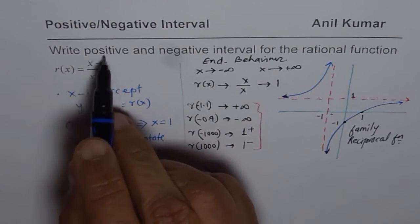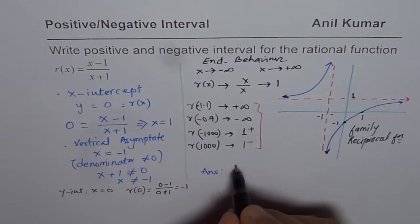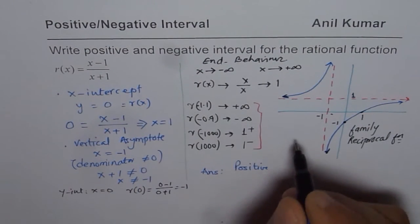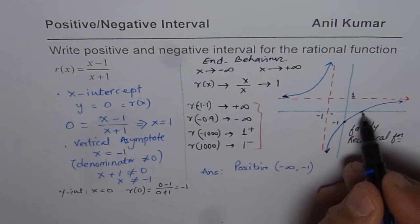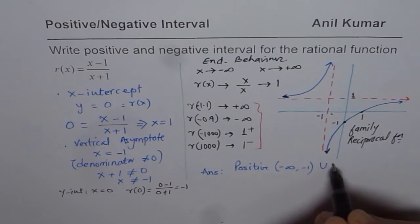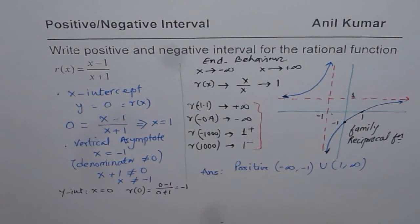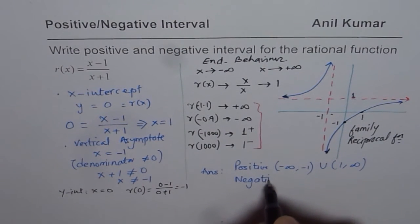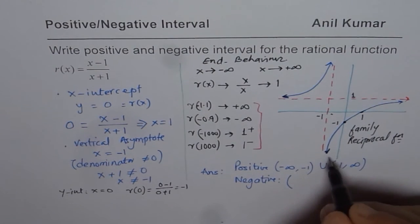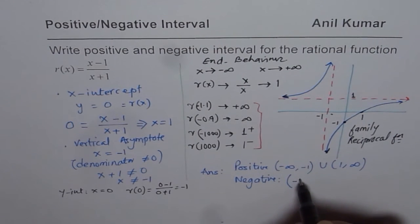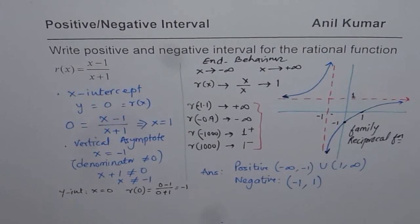Okay, so now our solution is interval when the function is positive. So when is it positive? We see it is positive from negative infinity to negative 1, and then from 1 to infinity. And it is negative between minus 1 to 1. So that is how you should be answering this question.